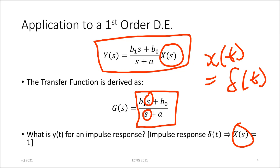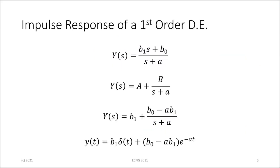Notice it's not quite a proper transfer function because we have the same order of S in the numerator and in the denominator. So what is the response to that impulse? Because it is not proper, we have to divide the numerator by the denominator to get rid of the S on top. If you do that, you get some constant plus B over S plus A.